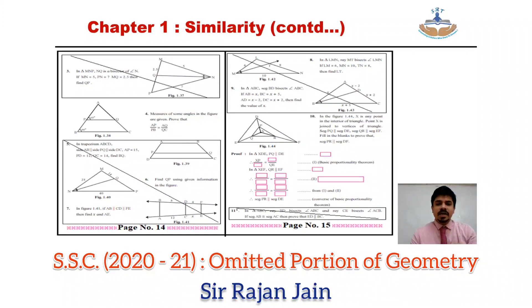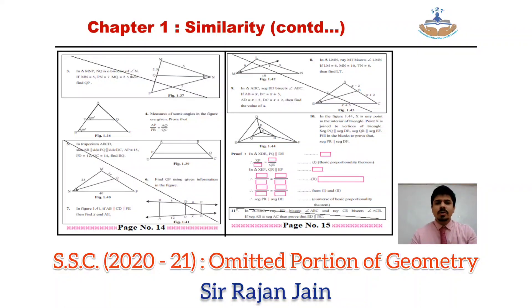Then come to page number 14. Question number 3 at the top of the page, and question numbers 5, 6, and 7 are omitted. They are based on either angle bisector property or property of intercepts of three parallel lines. Continuing on page number 15, top of the page — question number 8 and question number 9 you can strike out. Bottom of the page — question number 11 you can strike out.